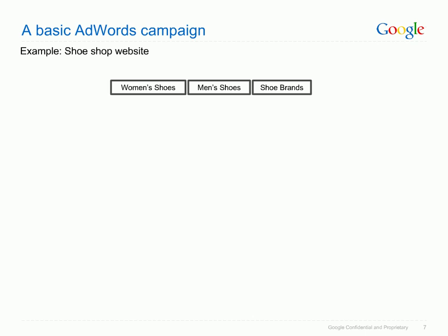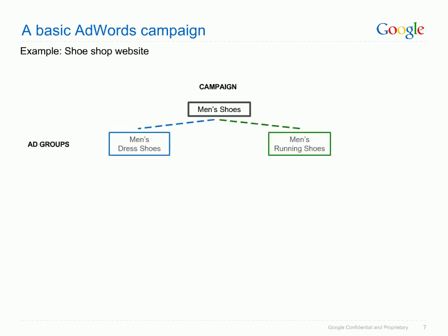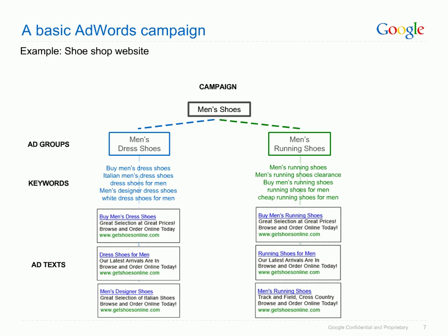Let's say that you own a shoe shop and your website offers a range of different types of shoes. You decide that you'd like to advertise men's shoes — that could be a campaign. You want to advertise both men's dress shoes and running shoes, so these could be your ad groups. Make sure that each ad group contains keywords that directly relate to your product. What words do you think your customers will use when searching for this type of product? These words could let your ad appear next to the Google search results and should be included as keywords. Now create ads that match those keywords. We recommend creating two or three different ads per ad group. That way, over time, you can test which one works best for you. Setting up your campaign this way allows your ads to show when they are most relevant to your potential customers.